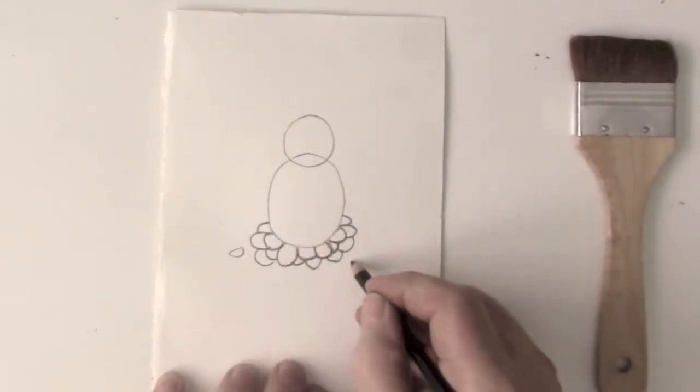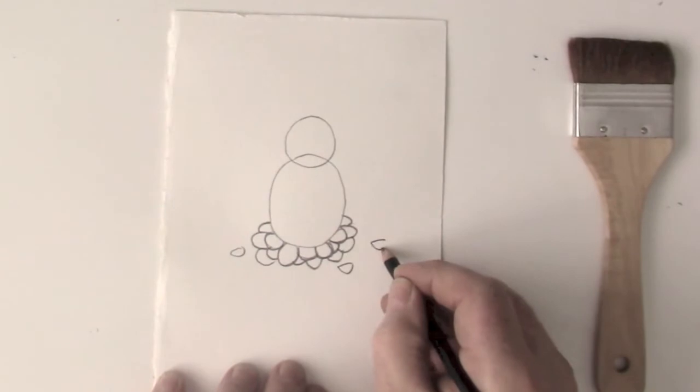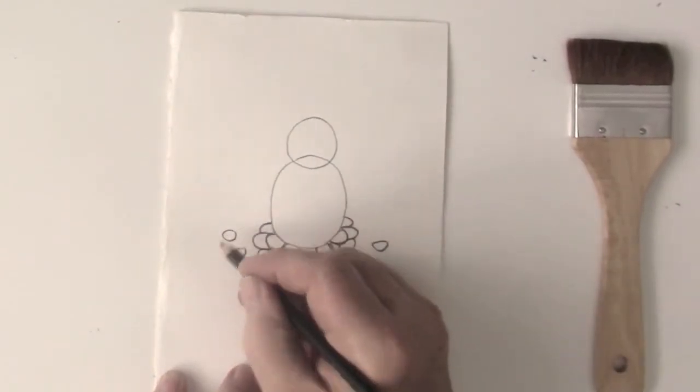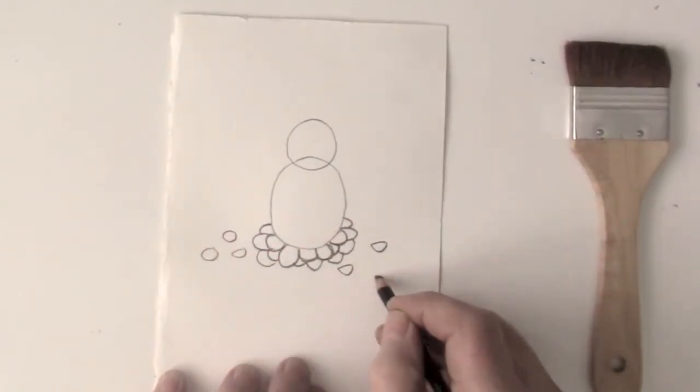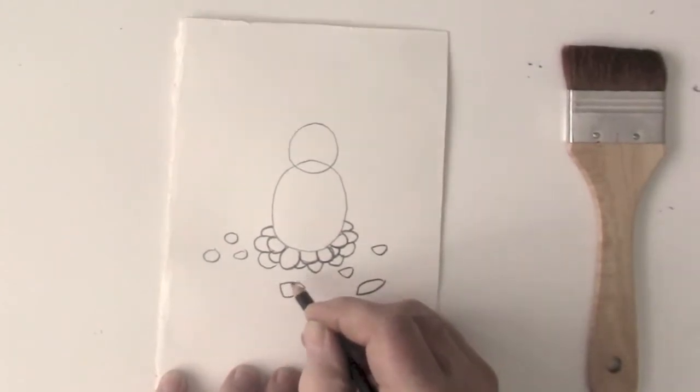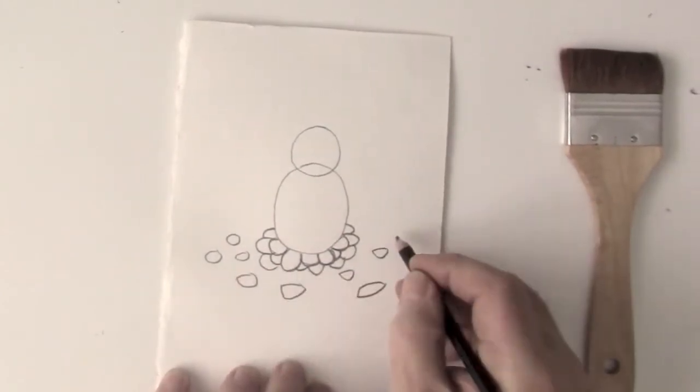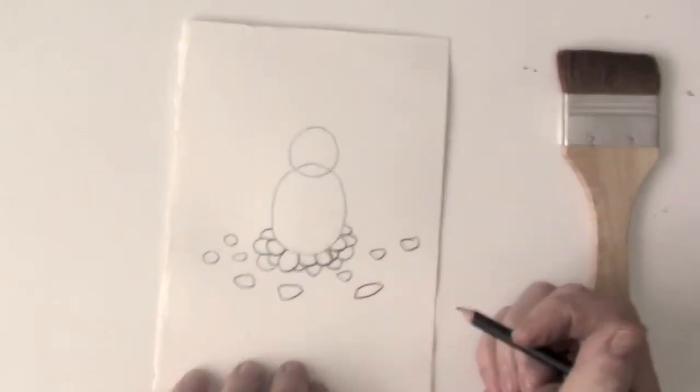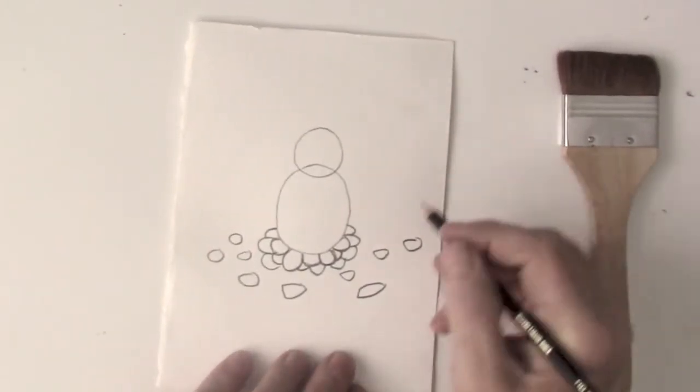Then you can put a few more scattered on the ground because where they nest, there's lots of rocks. Different shaped rocks. Mostly round. So our penguin is sitting in a nest.